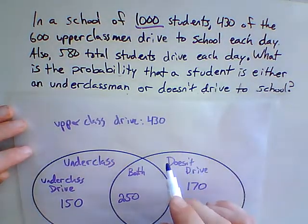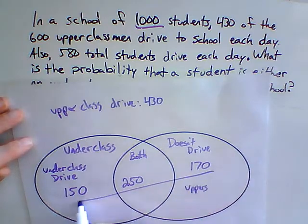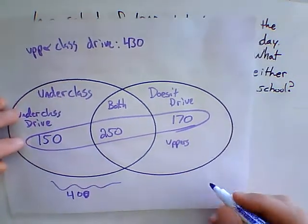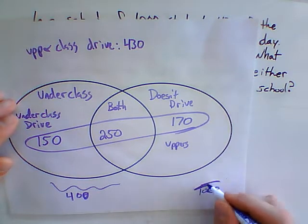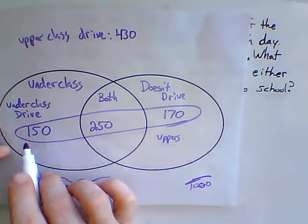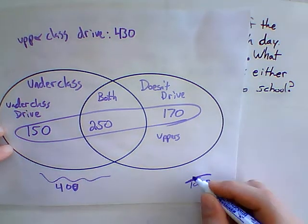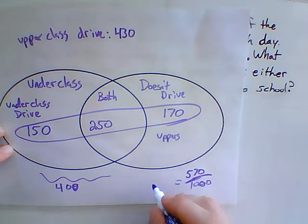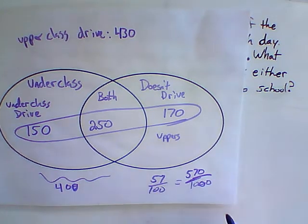So what's the probability that a student is an underclassman or they don't drive? That's these three groups right here, and they all add up to 1,000. 150 and 250 is 400, plus 170 is 570. That's 570 out of 1,000, or 57 out of 100, which is 57%.